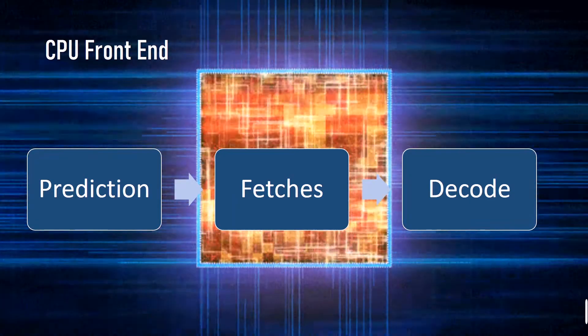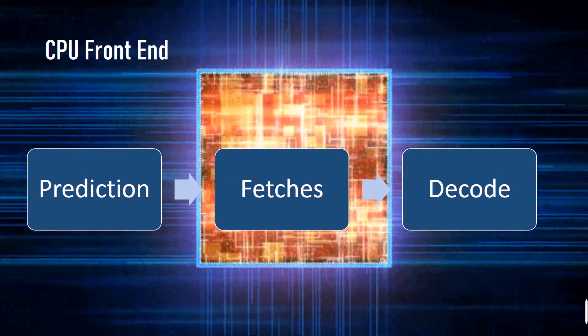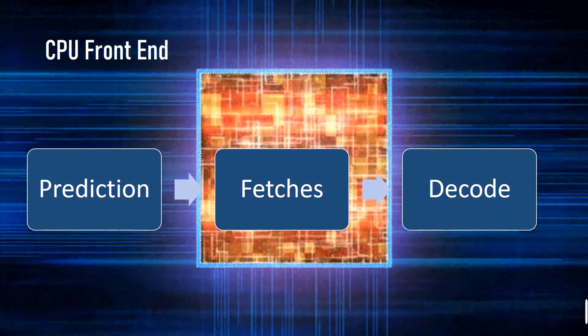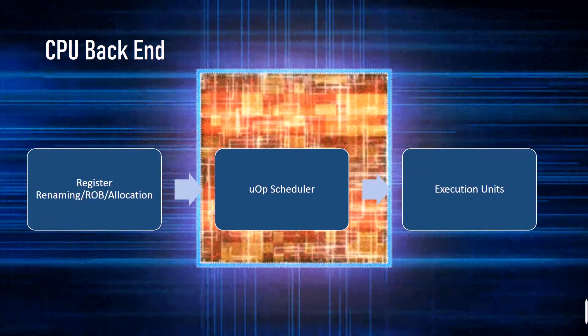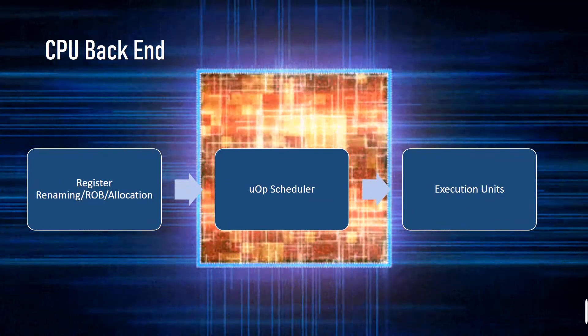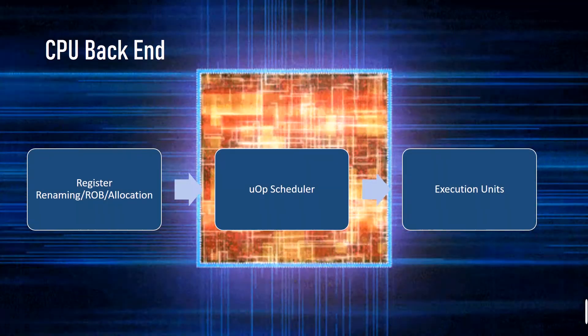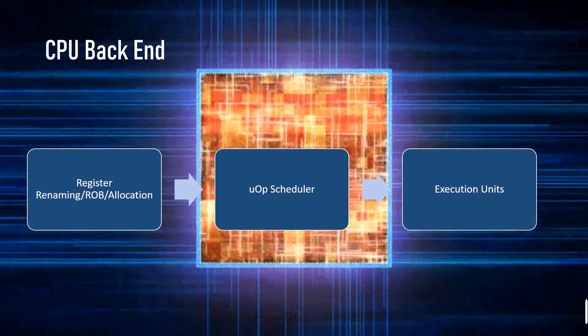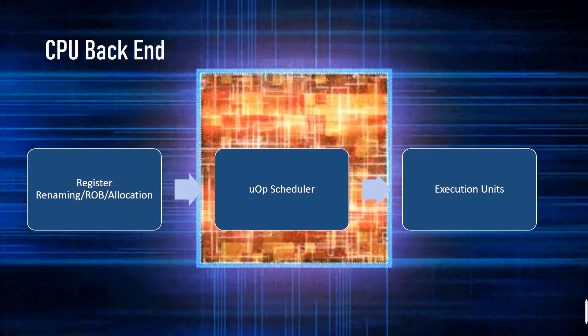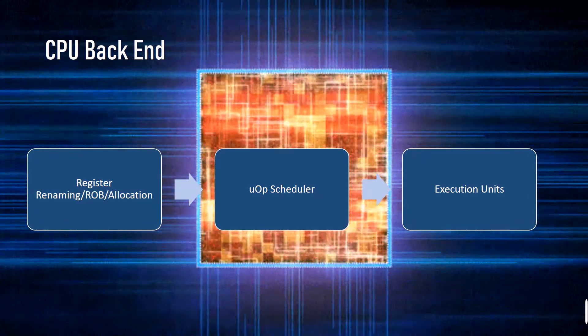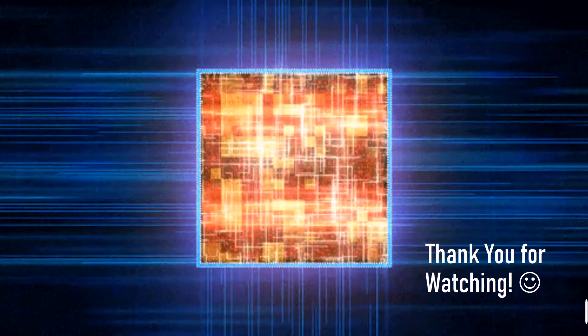The front end of the CPU first predicts what instructions are needed next, then fetches them and decodes them into micro operations or UOPs. UOPs is the strongest connection between instruction set architecture and micro architecture. Moving to the back end, the decoded UOPs uses out-of-order execution and superscalar execution that provide best performance and efficiently assign the UOPs to the execution unit.